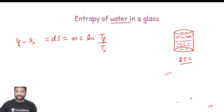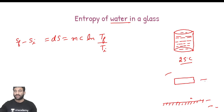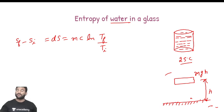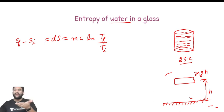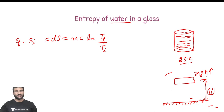Just like how we measure potential energy of any substance - consider the ground level, and a body at height h above the ground level. Its potential energy is mgh, where m is mass, g is acceleration due to gravity, and h is height above the ground level. We assume potential energy is zero at ground level because height is zero there. Potential energy is a relative term; we take a standard reference. As height increases, potential energy increases. Similarly for entropy, we need a reference.